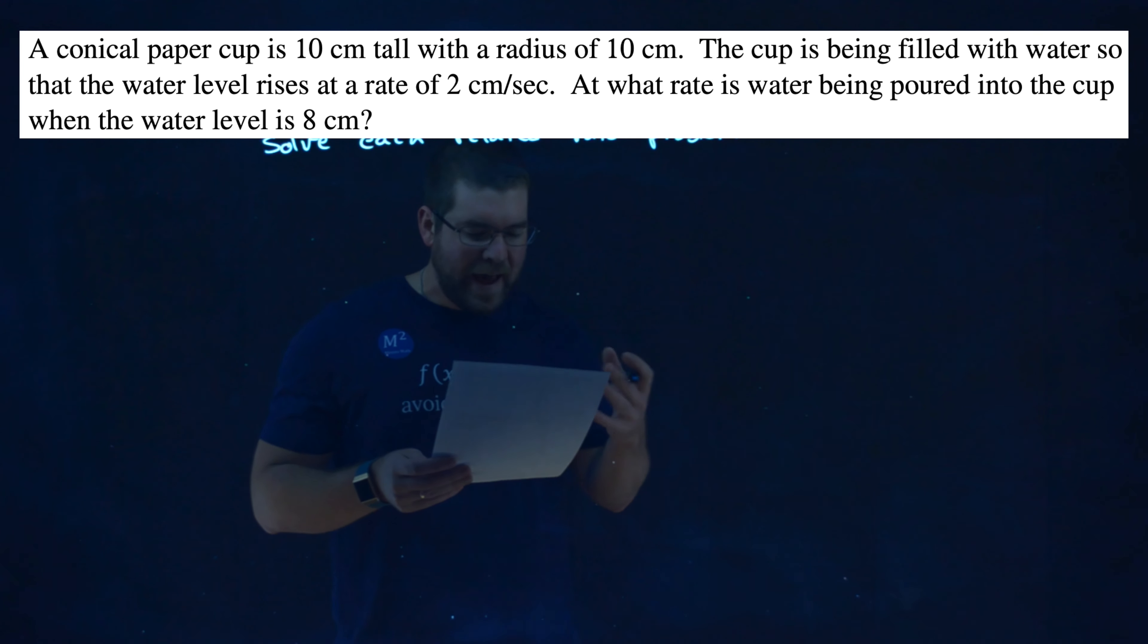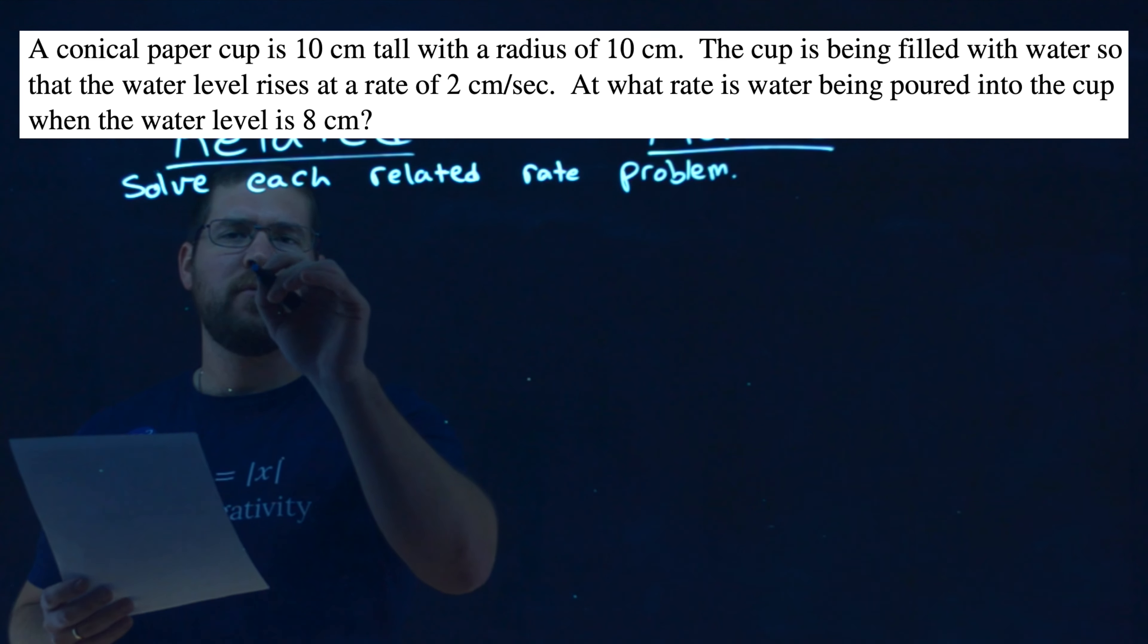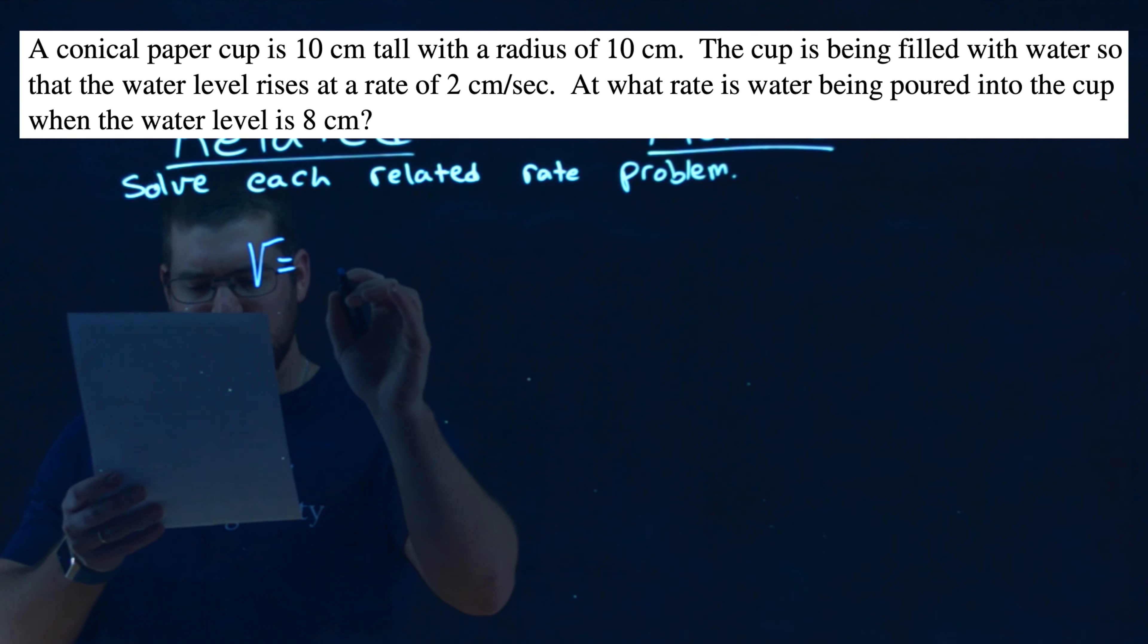Okay, so we have a cone, a conical paper cup, and the formula for that, the volume of it is pi h cubed over 3.